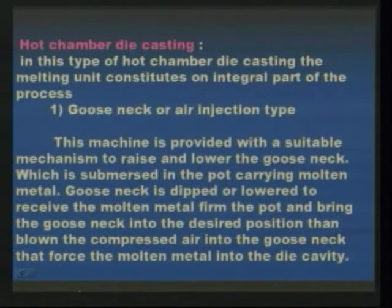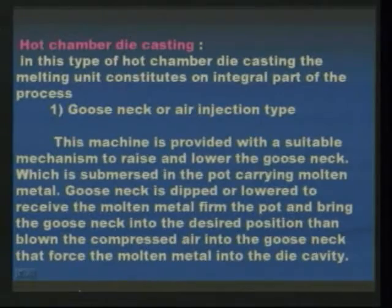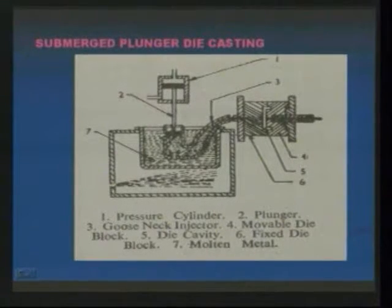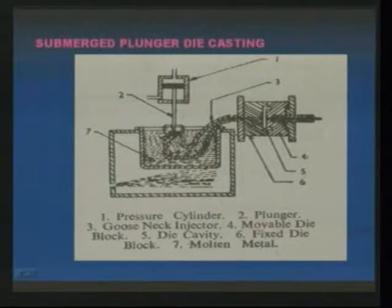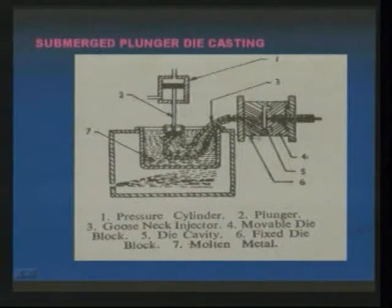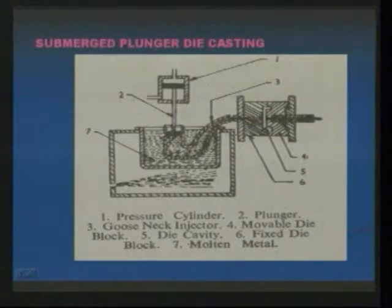In hot chamber die casting, the melting unit constitutes an integral part of the process. The gooseneck or air injection type machine is provided with a suitable mechanism to raise and lower the gooseneck. The gooseneck type injector is connected to a piston cylinder assembly. Whenever external pressure is applied, the plunger moves and metal enters the gooseneck, which is connected to the die cavity. When projected into the die cavity, the metal is pressed between the two dies and the corresponding castings are produced.